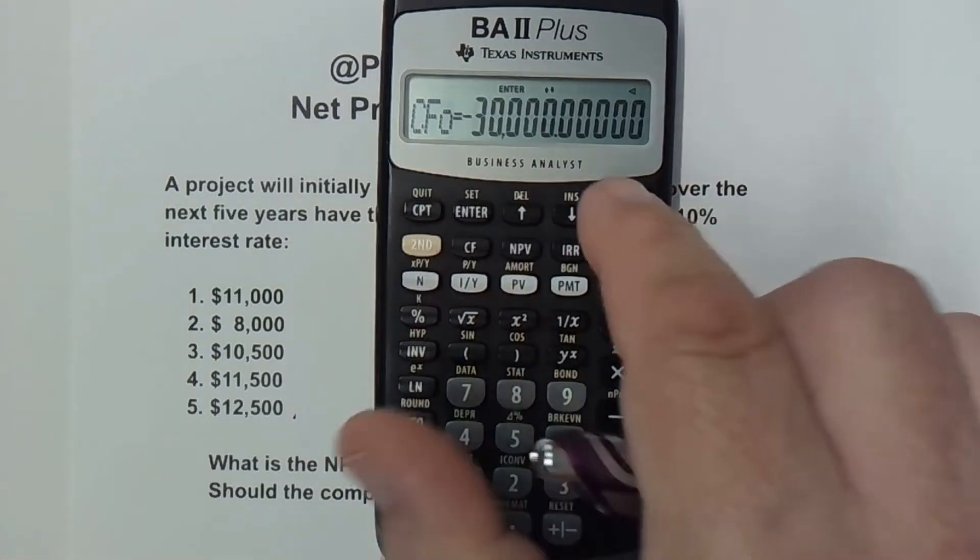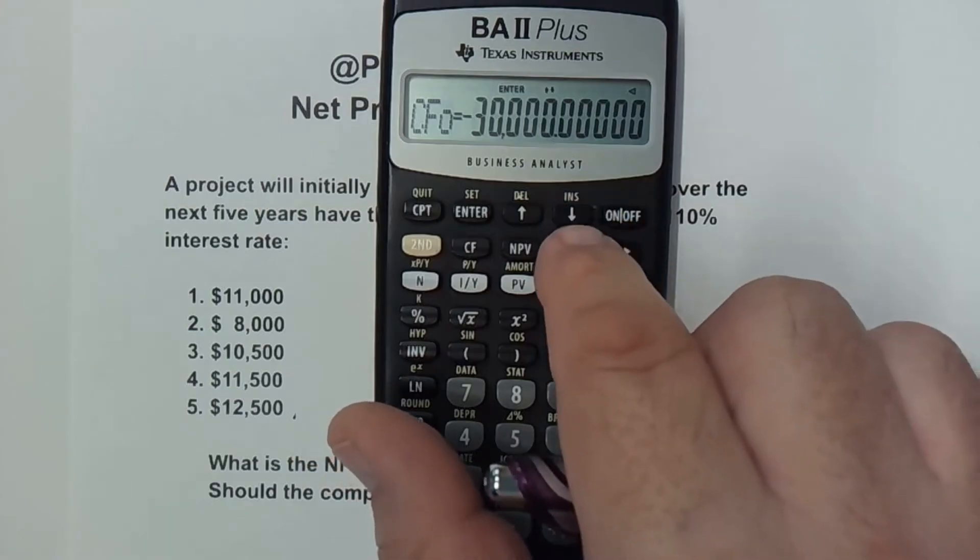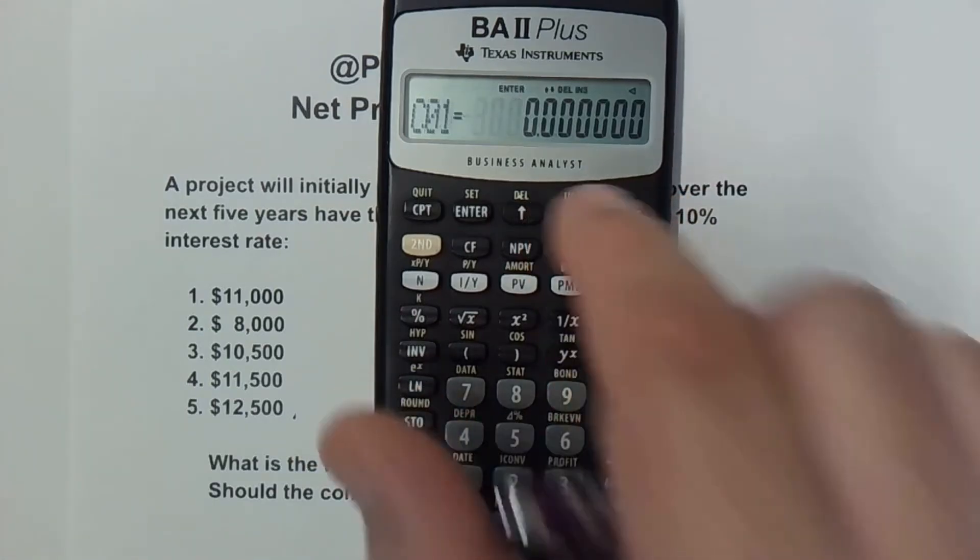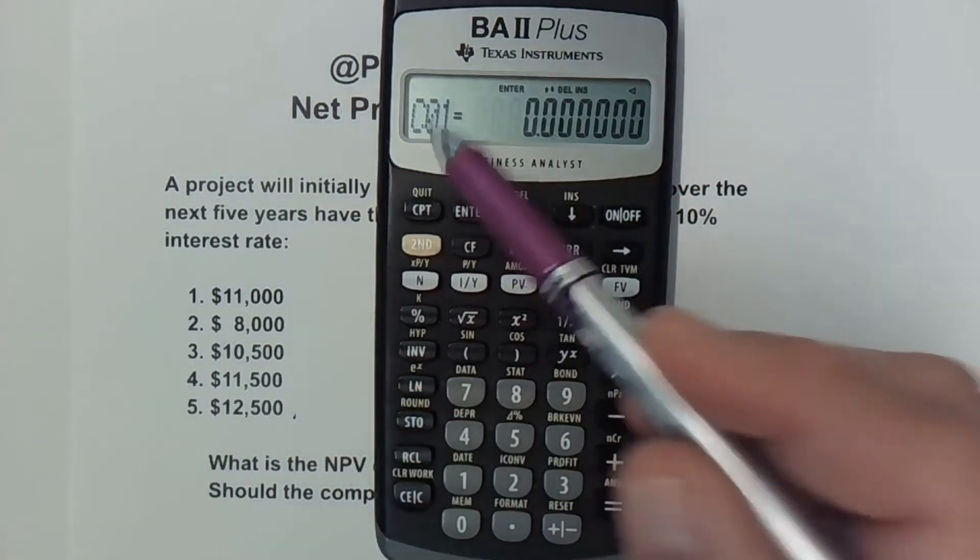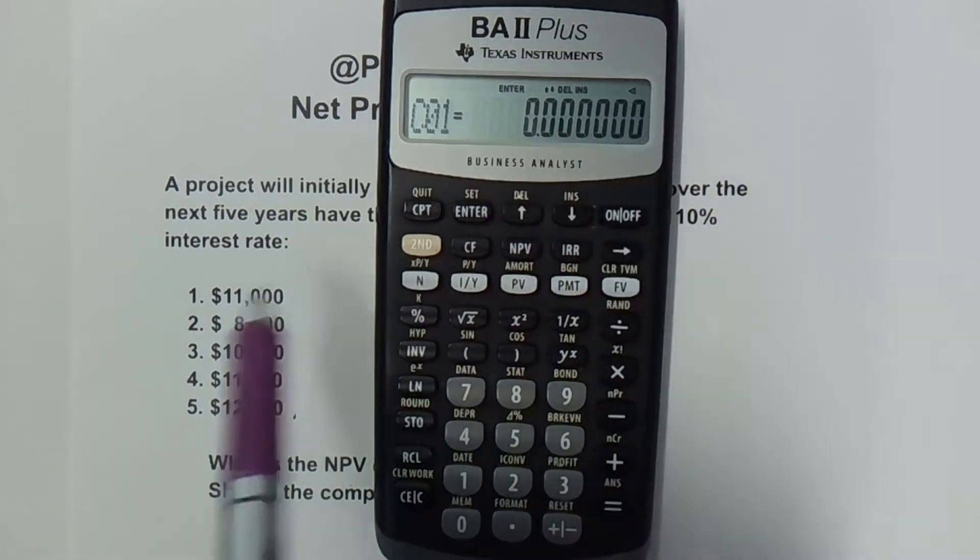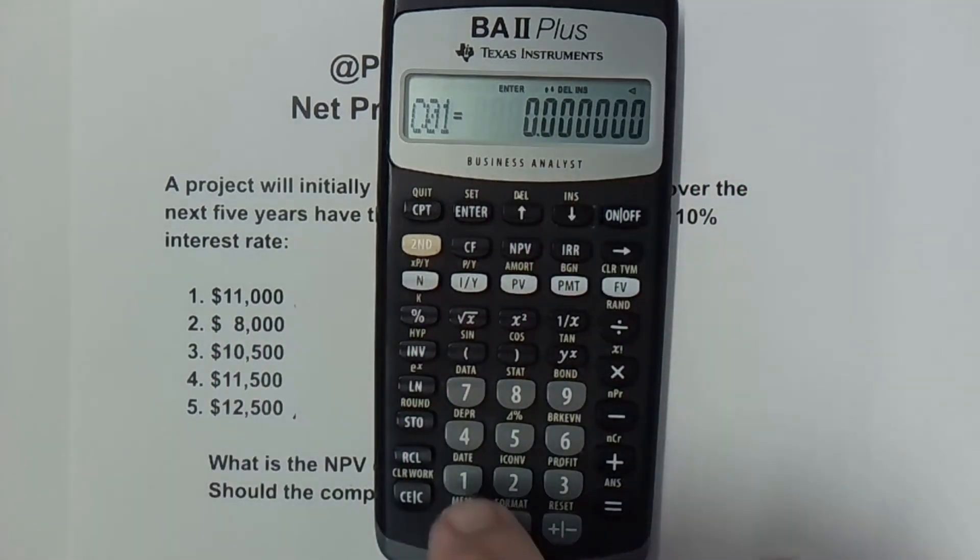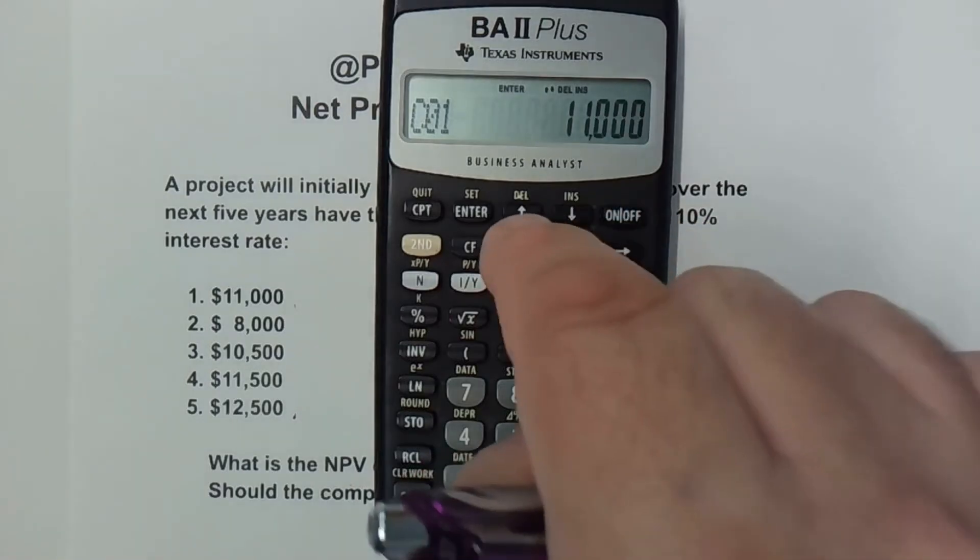We're ready for the first cash flow. So I'm going to go down. So I hit this down arrow and that gives me the cash flow for the first year. And the first year is $11,000. So I go ahead and enter 11,000 and hit enter.